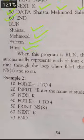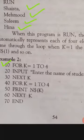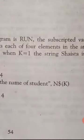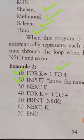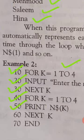Ab jo next program hai, us mein hum INPUT statement ko use karte hue array ko fill up karein ge. Line number 10 se start ho raha hai: FOR K = 1 TO 4. Is mein values hum INPUT karein ge - INPUT 'Enter the name of a student'. Is mein bhi hum ne N$(K) array name liya hai, aur K jo hai woh hum ne bracket mein is liye liya hai ke loop mein values 1 se lekar 4 tak hain. Us ke baad line number 30 par loop end ho raha hai. Next record, doosra loop start kiya hai jis mein values ki printing karwani hai screen par: FOR K = 1 TO 4. Line number 50 is: PRINT N$(K), aur 60: NEXT K, aur last is 70: END.